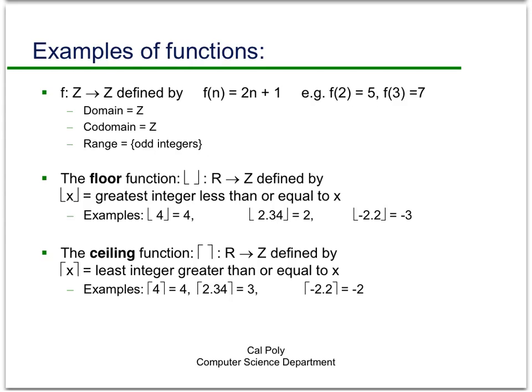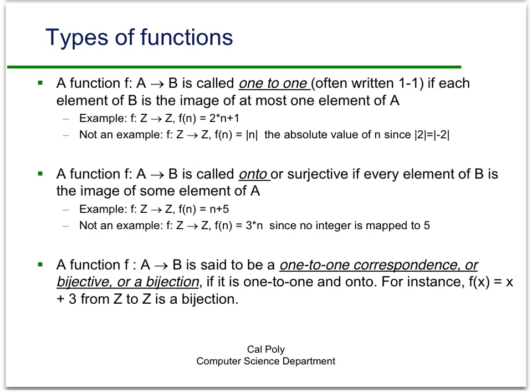The ceiling function works in a similar way except that it goes up. So in other words the ceiling of X is the least integer greater than or equal to X. So if we take our examples again, on the integer 4 it just gives you 4 back. On 2.34 it goes up the number line until it hits an integer which is 3. And on minus 2.2 it goes up in the positive direction on the number line until it hits an integer and that integer is minus 2. So those functions will come in pretty handy and you'll see that we're going to use floor and ceiling quite a bit in computing.